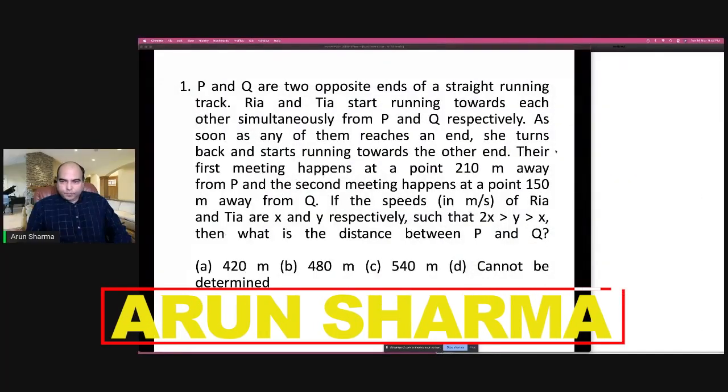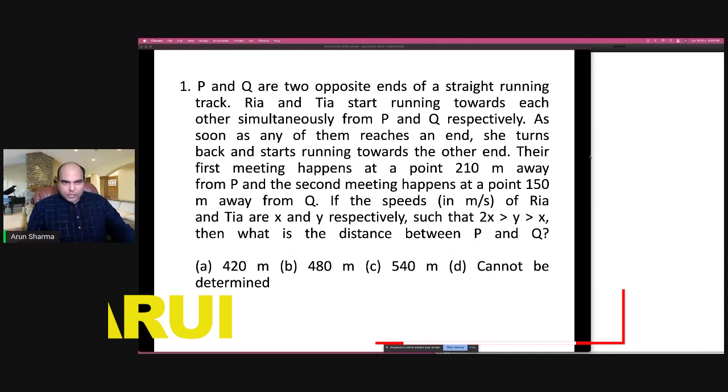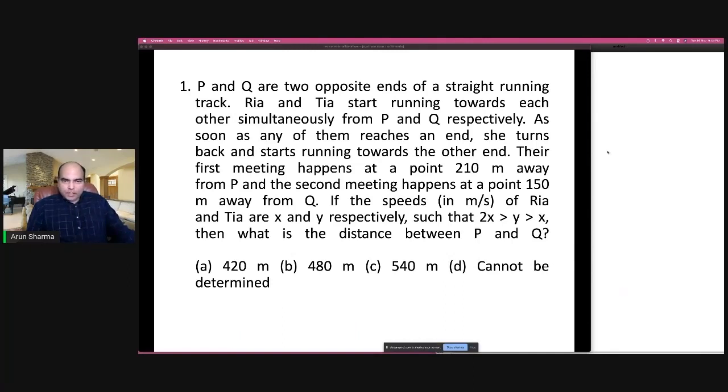First question: P and Q are two opposite ends of a straight running track.